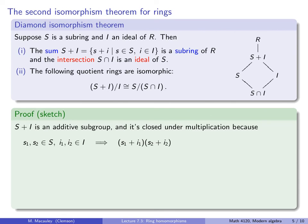As with the first isomorphism theorem, much of the proof follows from the isomorphism theorem for groups. S+I is an additive subgroup because both S and I are. It's closed under multiplication because if you take two elements in S+I, say (s₁+i₁)(s₂+i₂), you get s₁s₂ which is in S, and the remaining terms all contain i's and are thus in the ideal I. So this product is in S+I, and therefore S+I is a subring.